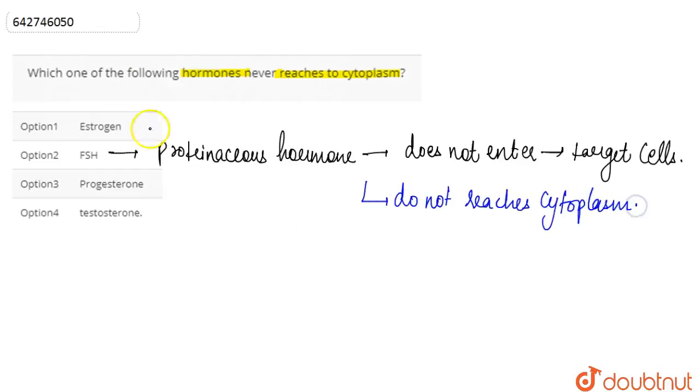It binds to the receptor that's present on the cell membrane and activates a membrane-bound enzyme that causes the conversion of ATP to cAMP, which is the second messenger. This then alters the activity of the enzyme in the cytoplasm.